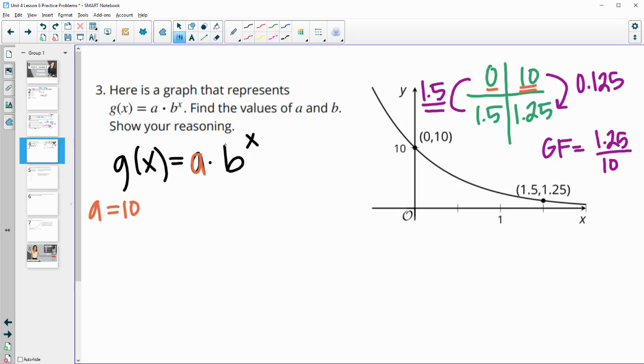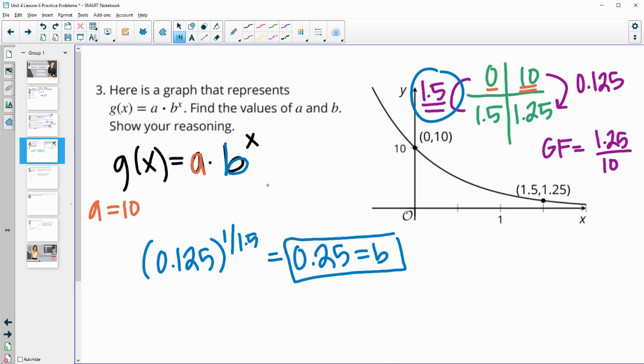Then we need to figure out this growth factor here. So we know that the growth factor is 0.125 every one and a half time periods. So in order to account for this, we would want to bring this to a power of one divided by 1.5 so that we can just figure out what it is for one time period. And when you do this, when you type this into your calculator, you get a growth factor of 0.25 for every one time period. And so then this would be your B value. So you can do it as the decimal of 0.25, or you could say that it's one fourth, but your initial value is 10, your growth factor is 0.25.